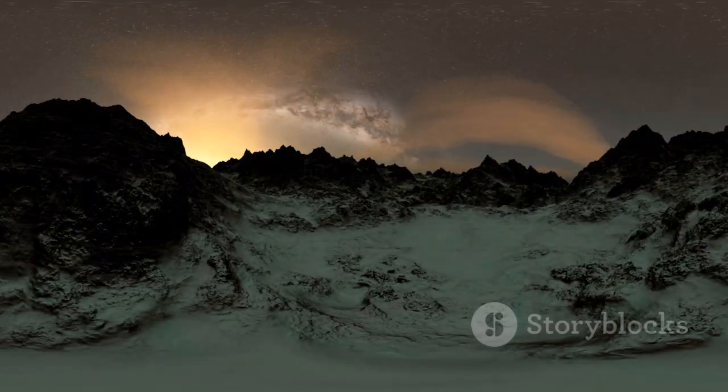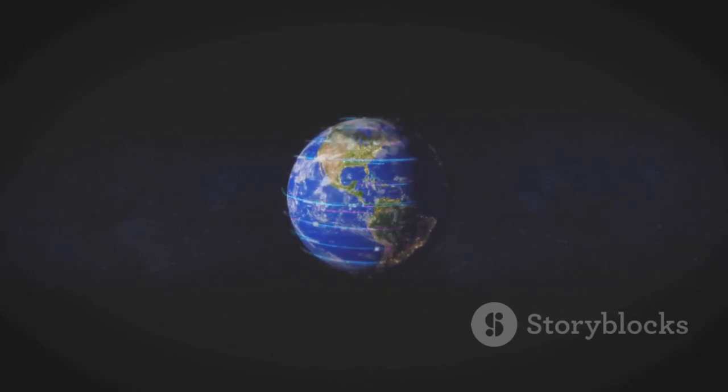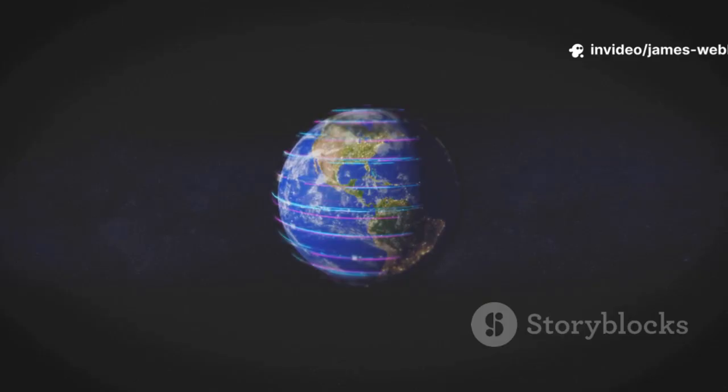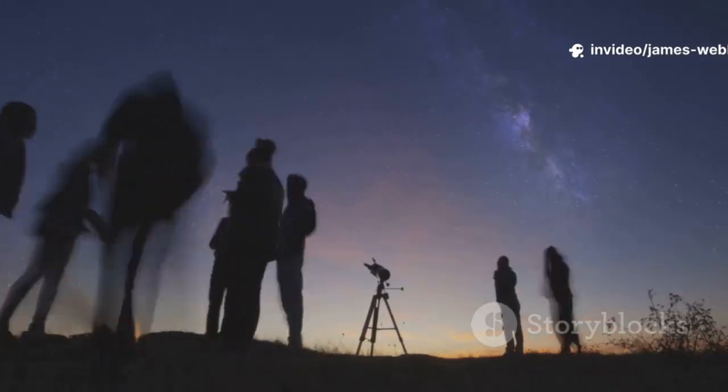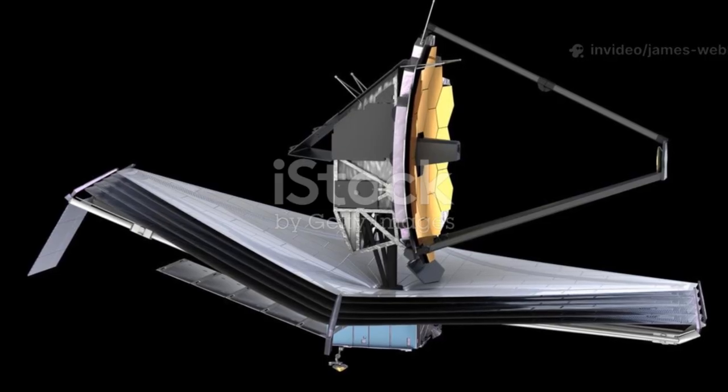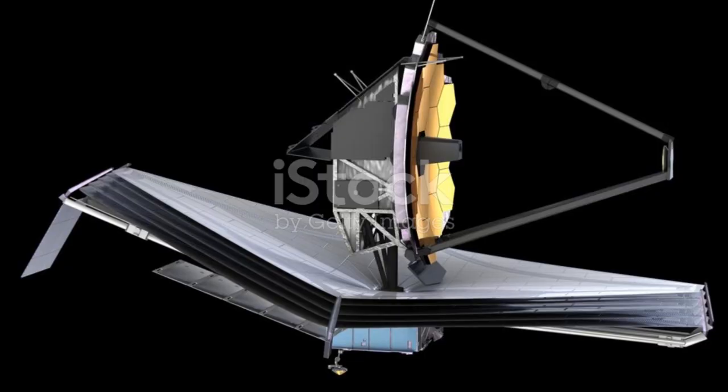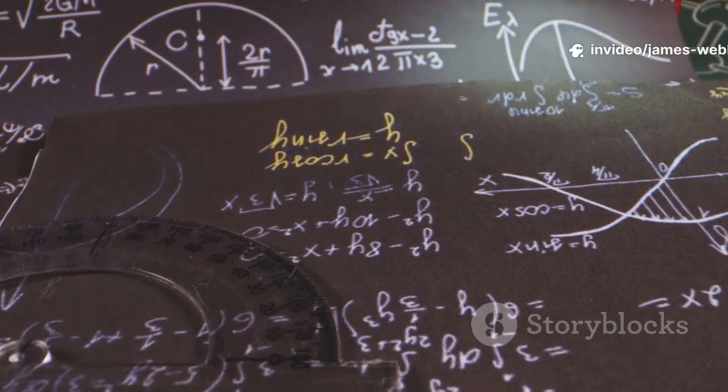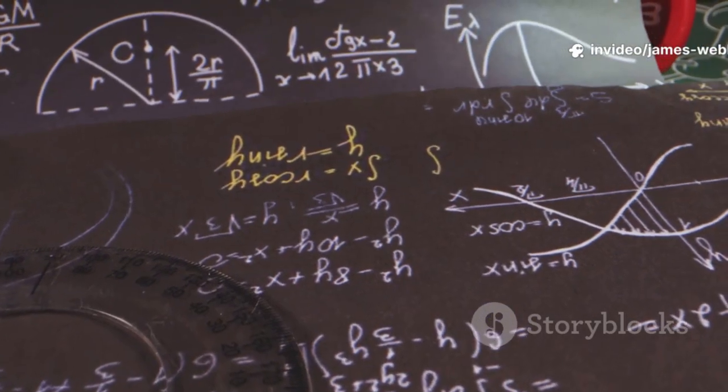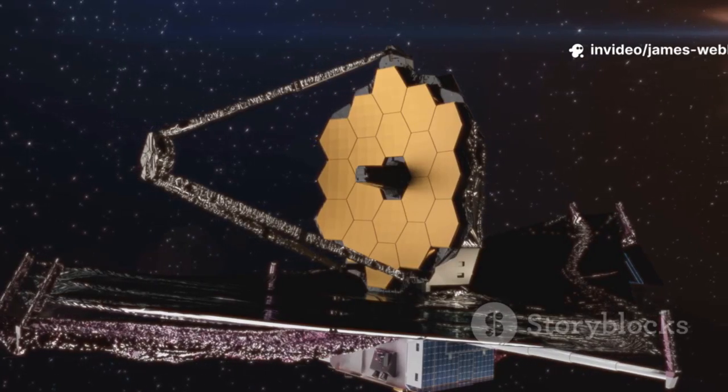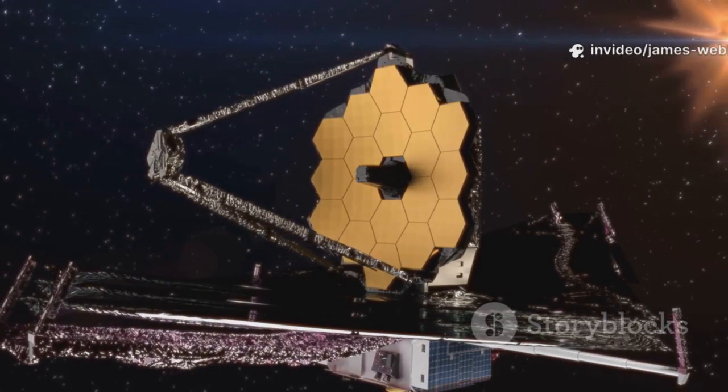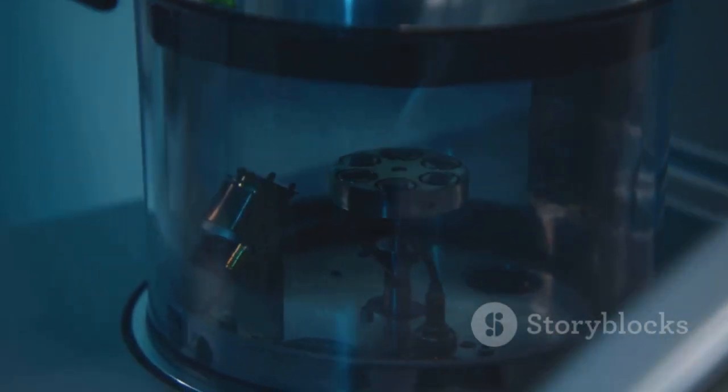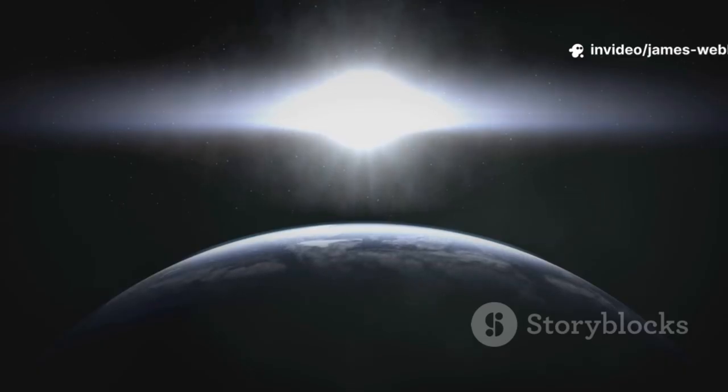We stand on a small, rocky planet in a quiet corner of one galaxy among billions. For centuries, we've looked up at the lights and wondered. With each step forward, with each new telescope and discovery, we think we're getting closer to a complete picture. We build models and theories that seem to explain what we can see. Then, something like 3I Atlas comes along. A visitor from an unknown place, made of an unknown substance, that shatters our assumptions and reminds us our picture is far from complete.